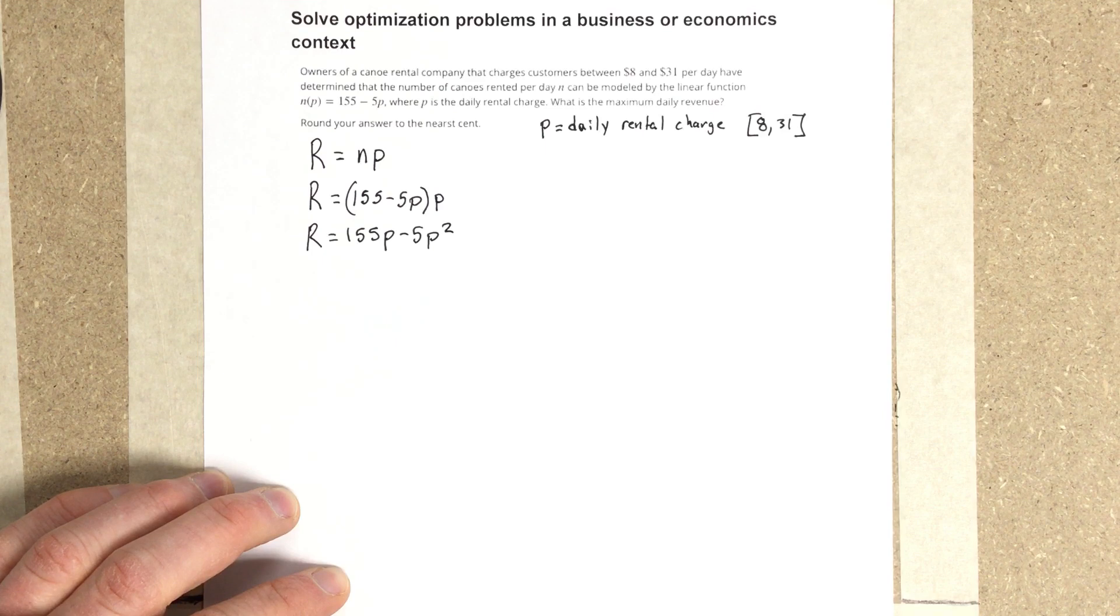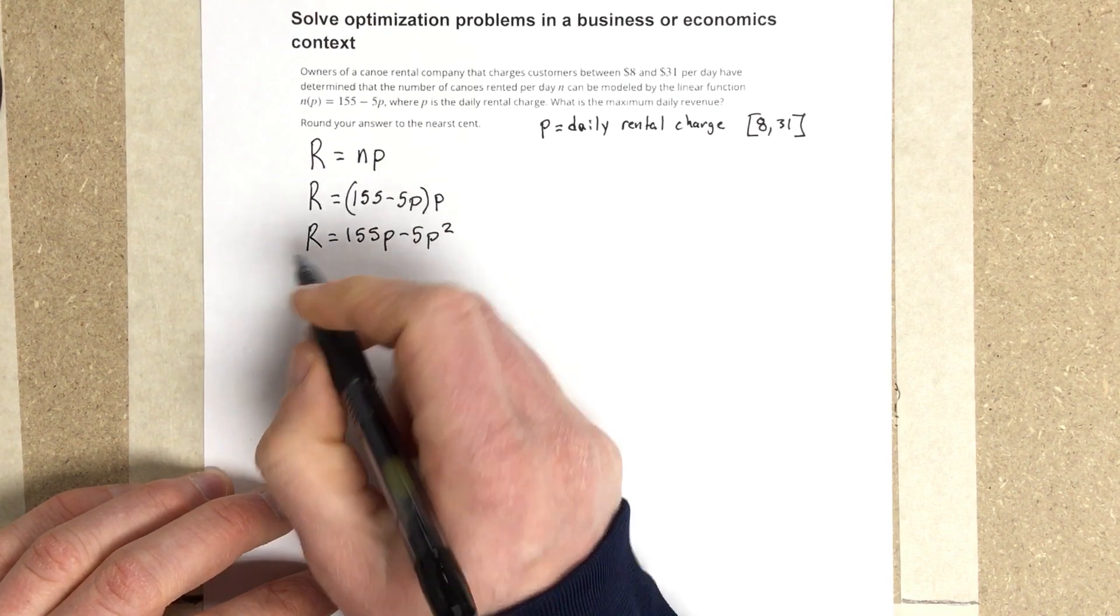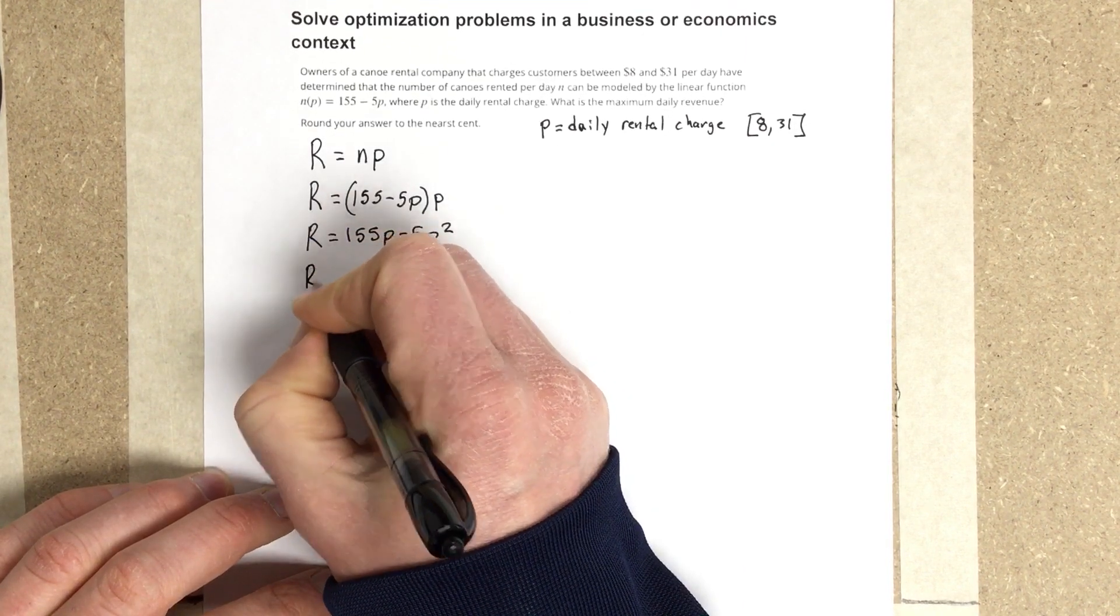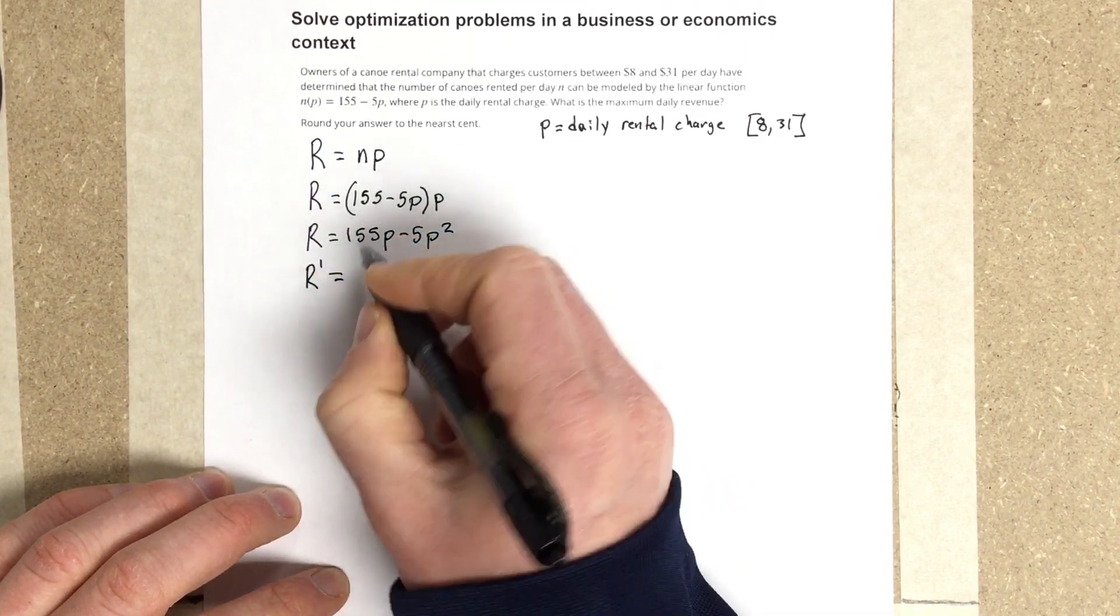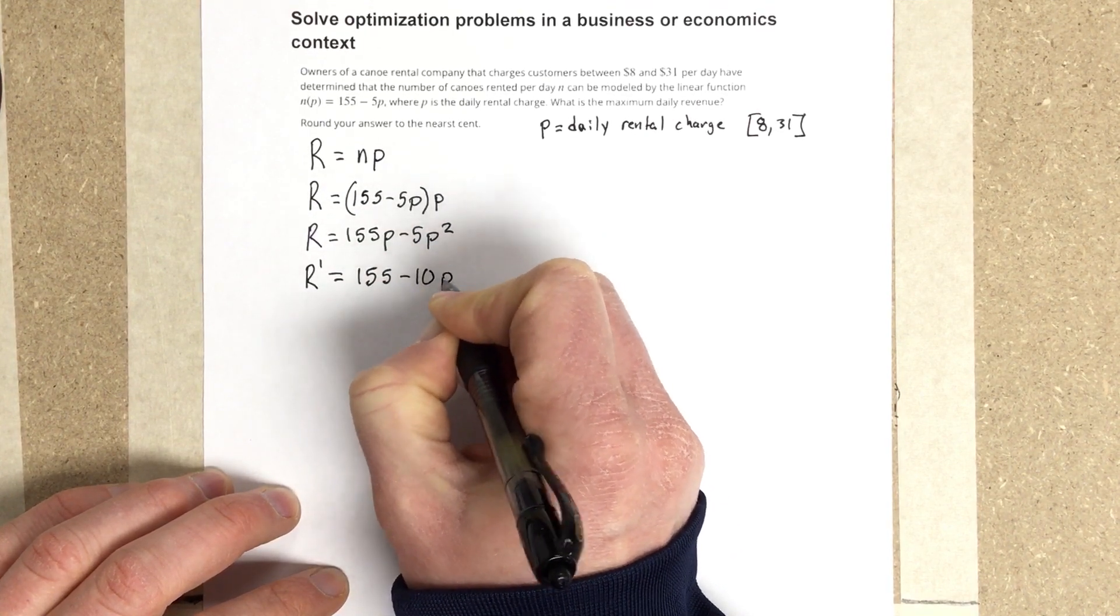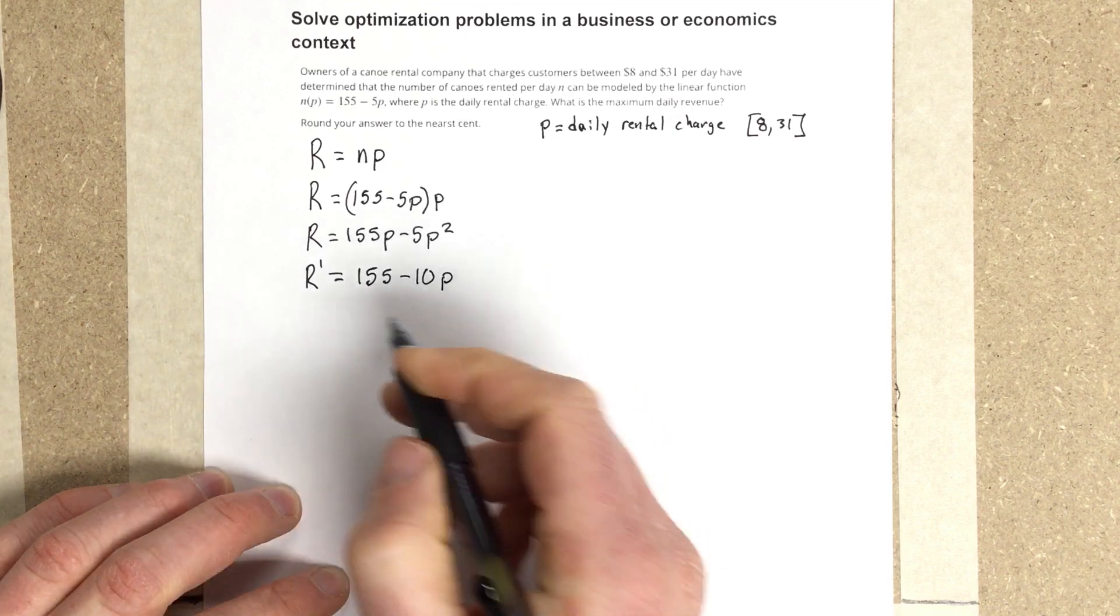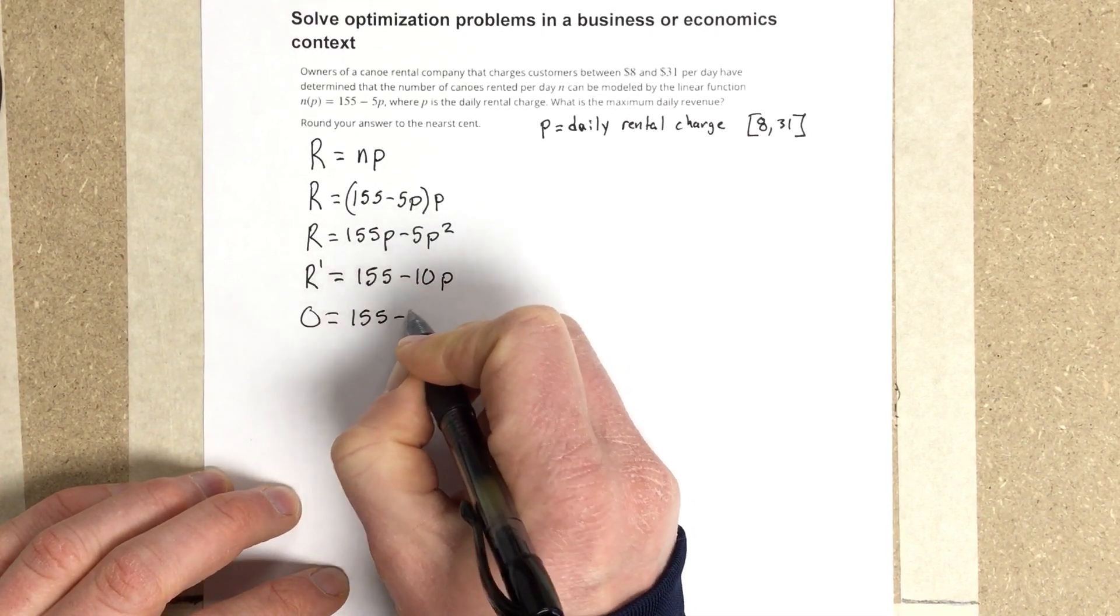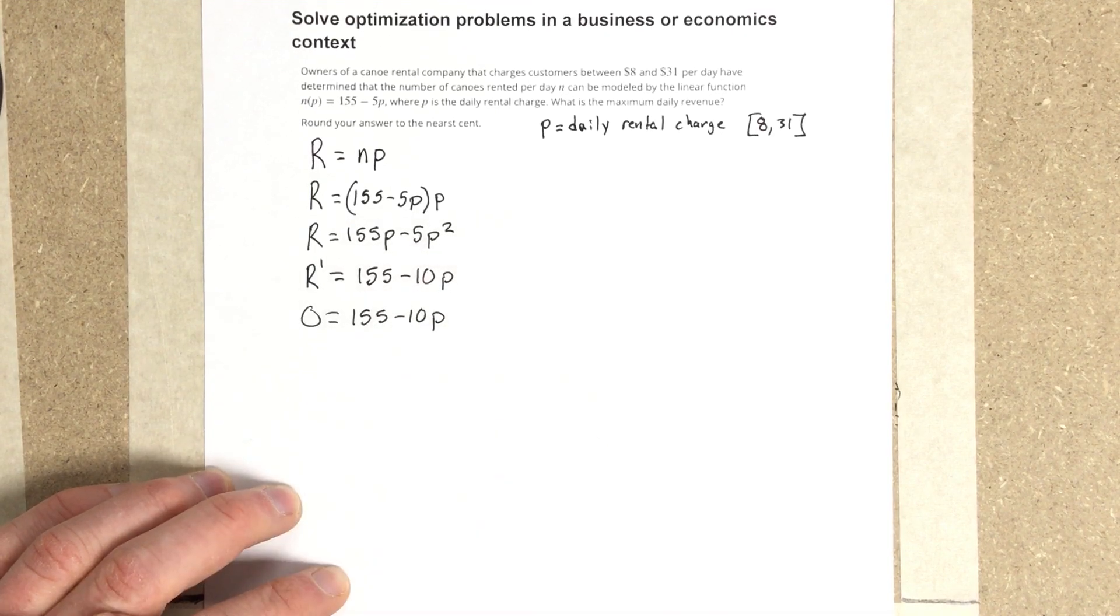Then we can find the derivative because we're trying to maximize the revenue. So we want to find the derivative and use that first derivative test. We're going to say R prime is equal to 155 minus 10P, and then we set this equal to 0. We're trying to find our critical values.